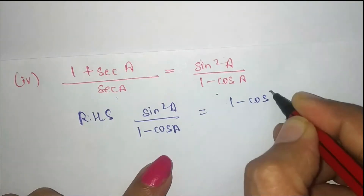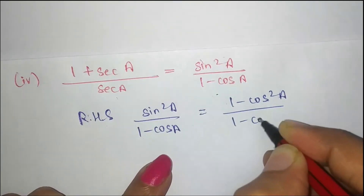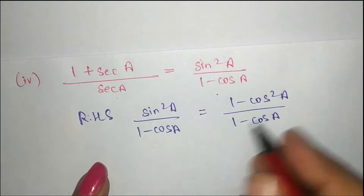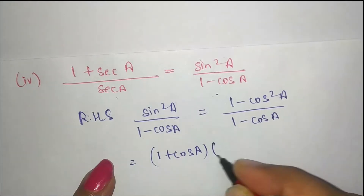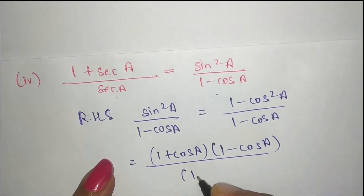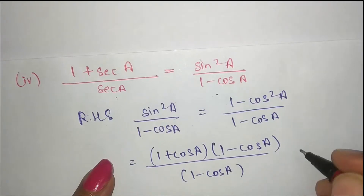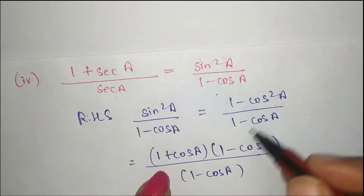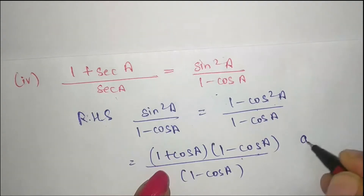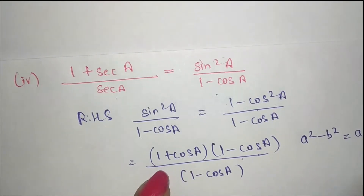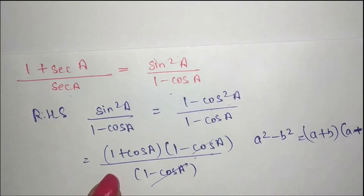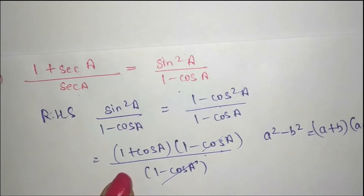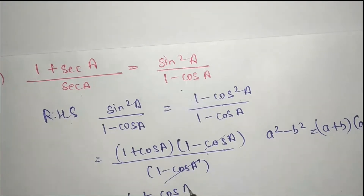sin²a we can write as 1 minus cos²a upon 1 minus cos a. Now 1 minus cos²a we can write as (1 + cos a)(1 minus cos a) using the identity a² minus b² equals (a + b)(a minus b). Now (1 minus cos a) cancels, and we are left with 1 plus cos a.